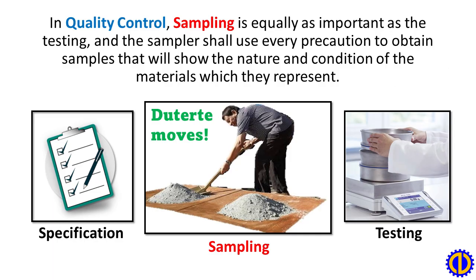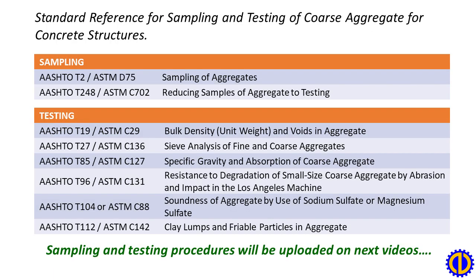In quality control, sampling is equally as important as testing, and the sampler shall use every precaution to obtain samples that will show the nature and condition of the materials which they represent. Standard references for sampling and testing of coarse aggregate for concrete structures: AASHTO T2 for sampling, AASHTO T248 for reducing samples, AASHTO T19 for unit weight, AASHTO T27 for sieve analysis, AASHTO T85 for specific gravity and absorption, AASHTO T96 for abrasion, AASHTO T104 for soundness, and AASHTO T112 for clay lumps and friable particles.